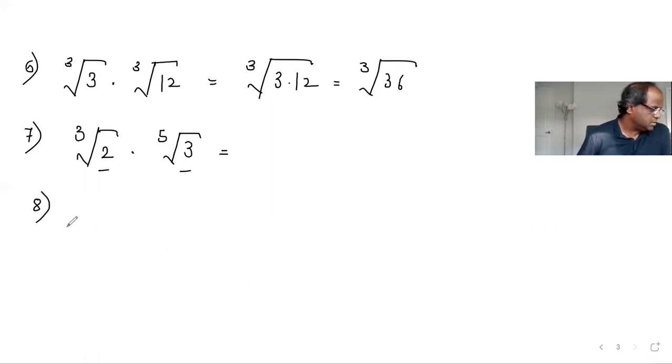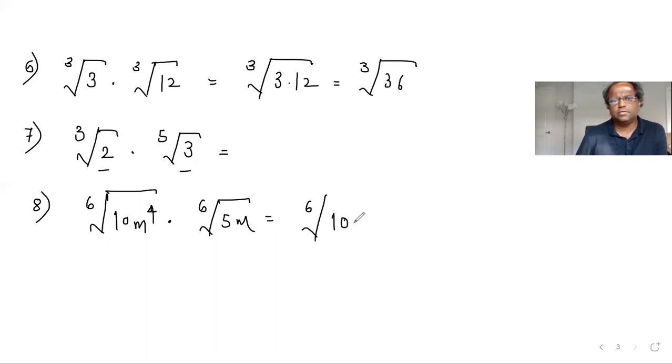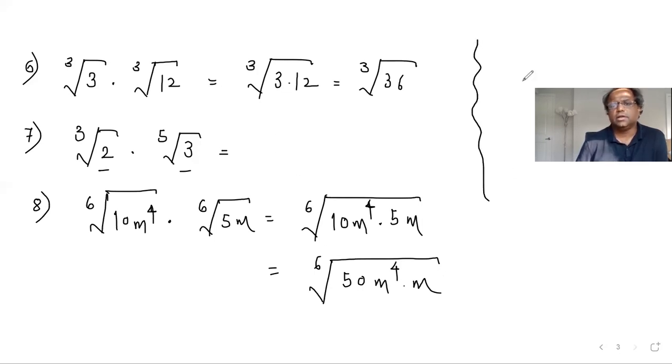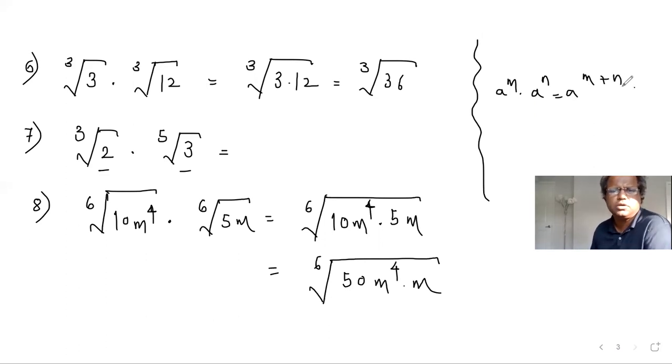Now, here, if I give you number 8 is 6th root of m to the power 4 times 6th root of 5m. 6th root of m to the power 4 times 5m, 6th root of 10 times 5 is 50m fourth times m. And you know, with the exponent rule that, you know, from the exponent rule, is that a to the power m, a to the power n is a to the power m plus n. And of course, when we will do the exponent, I will discuss this rule as well, in much details. So, your final answer is 6th root of 50m to the power 5.